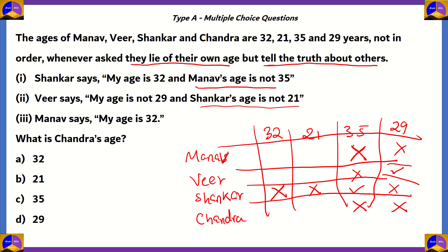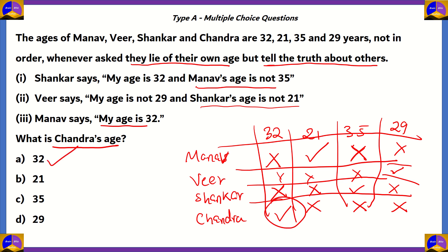The next statement: Manav says his age is 32. Since they lie about their own age, Manav's age is actually not 32 — so we cross out Manav at 32. From that, Manav's age must be 21. Since the remaining age is Chandra's, his age would be 32. They are asking what is Chandra's age, which is 32 — option A.